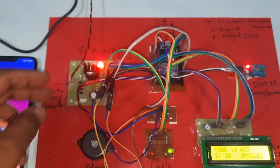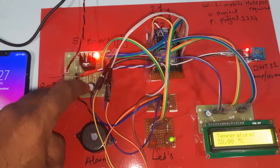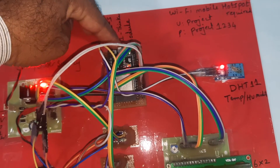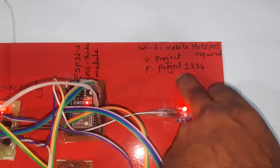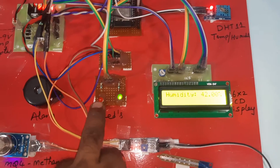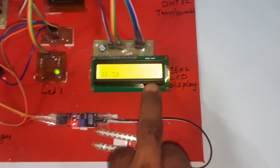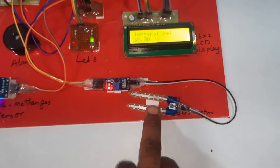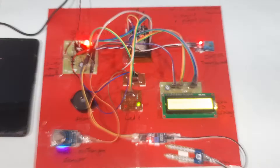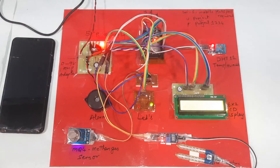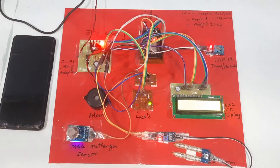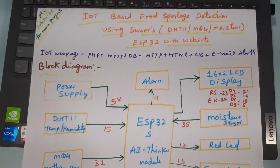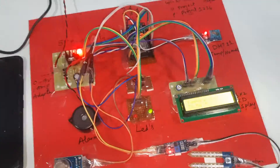To recap the hardware: bridge rectifier, filter capacitor, 7805 regulator, 5-volt power supply module, ESP32 AI Thinker board, DHT11 temperature and humidity sensor, Wi-Fi hotspot (project/project1234), alarm, red LED, green LED indicators, 16x2 LCD display, MQ4 methane gas sensor, and moisture sensor. Here is the website, block diagram, and hardware kit.